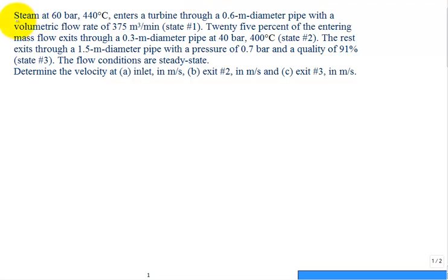This problem has steam at 60 bar and 440 degrees C entering a turbine through a 0.6 meter diameter pipe with a given volumetric flow rate of 375 meter cubes per minute.